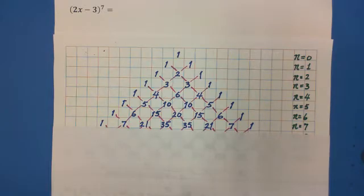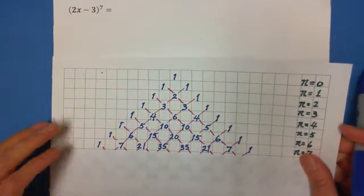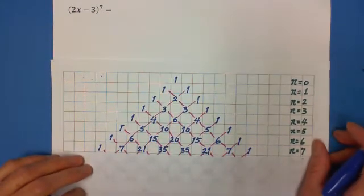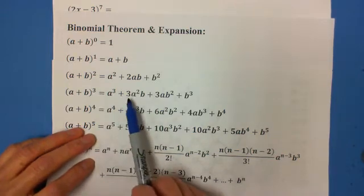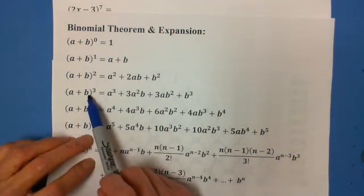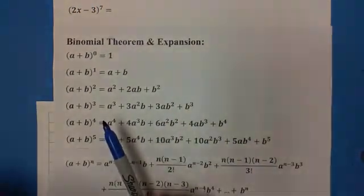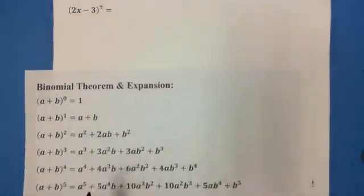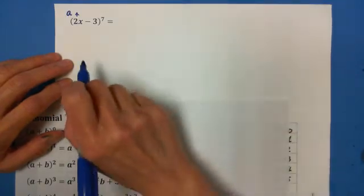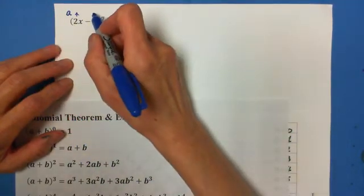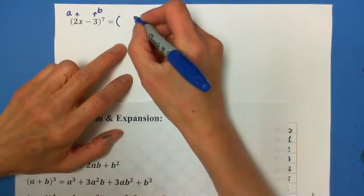Because when the exponent is 7, there are 8 terms. For easy calculation, to organize all the terms, I'll show you a very easy way. Each term has a coefficient and two components. In this question, we identify: a equals 2x, and b equals negative 3. Each term will have 3 components.